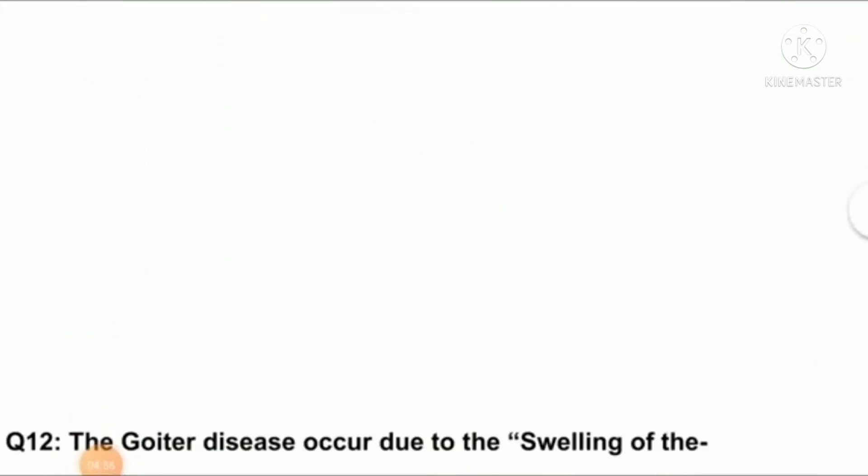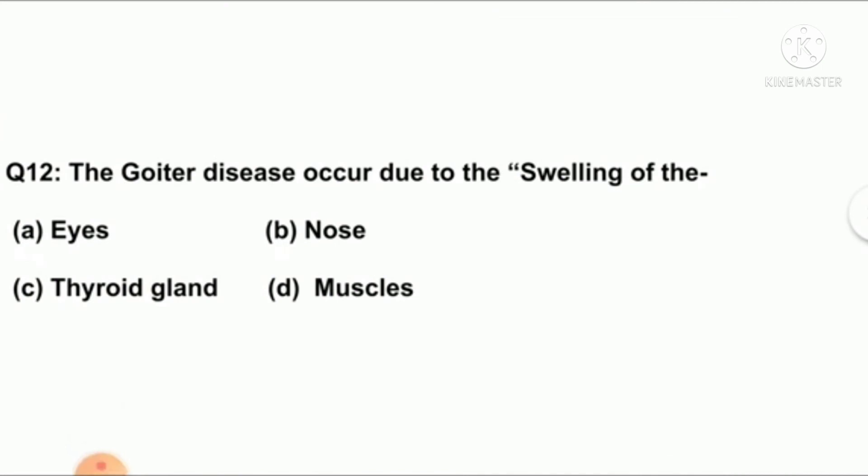Question number twelve: the goiter disease occurs due to the swelling of the option A: eyes, B: nose, C: thyroid gland, D: muscles. Here the right answer is option C: thyroid gland.